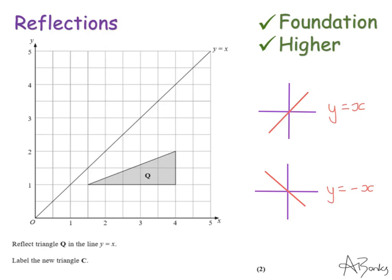I like to do the counting way. So I'm going to start with this point here and to get from this point to the line, I'm going to go directly to the line. It is half a square across. So I'm going to travel the other half a square and that is where my point will end up.